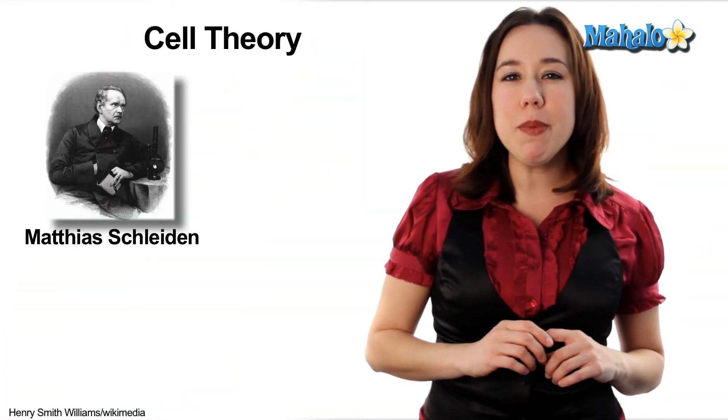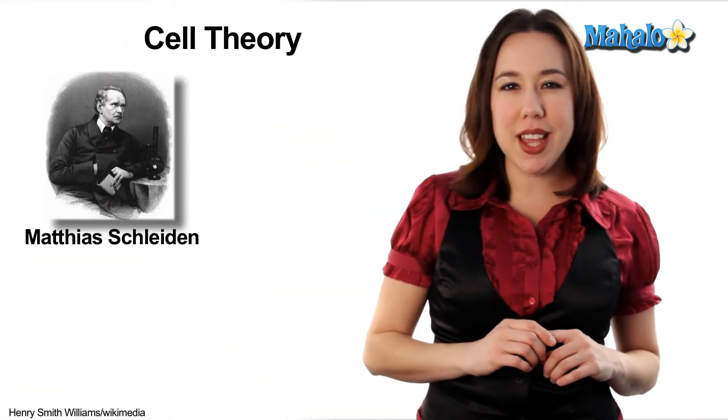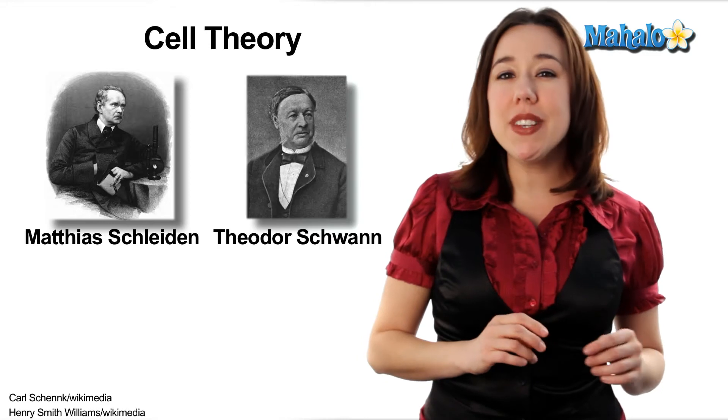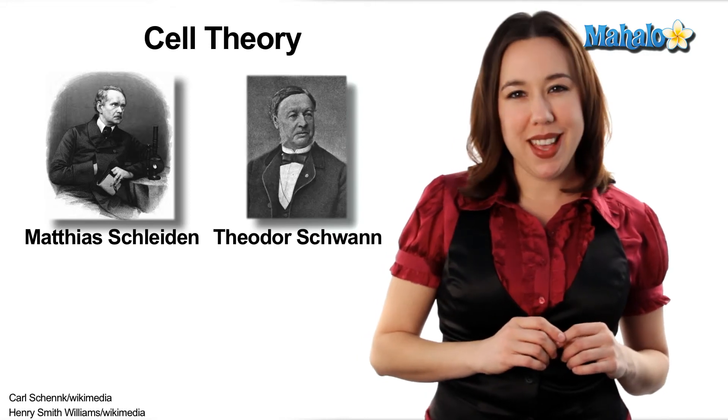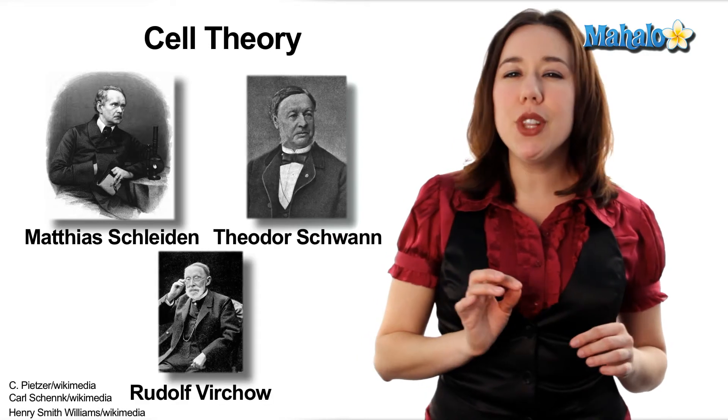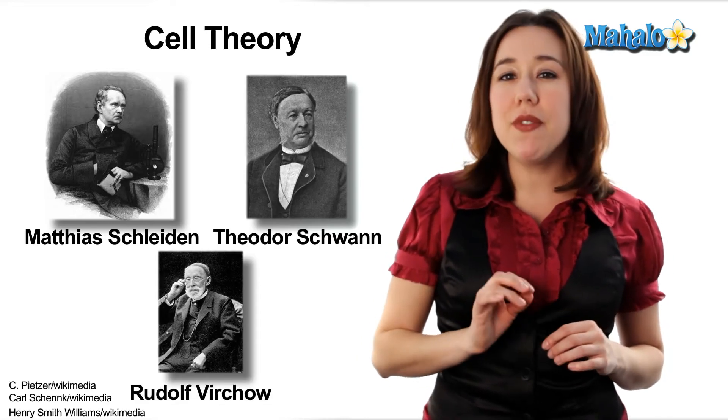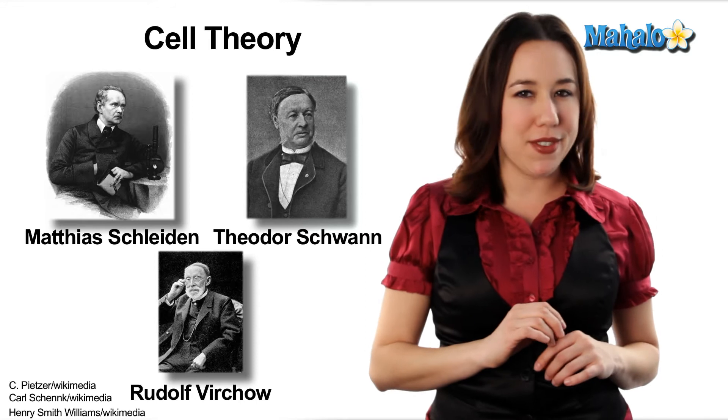Over the next 175 years, research would lead to the cell theory, first proposed by German botanist Matthias Schleiden and physiologist Theodore Schwann, and then fully refined by Virchow in 1858.